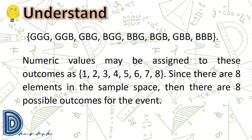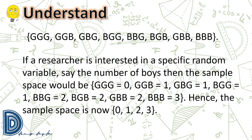Numeric values 1 through 8 may be assigned to these outcomes. If a researcher is interested in the number of boys as the random variable, the sample space becomes: 0 for three girls (GGG), 1 for two girls and one boy (GGB, GBG, BGG), 2 for two boys and one girl (BBG, BGB, GBB), and 3 for three boys (BBB). Hence the new sample space is {0, 1, 2, 3}.